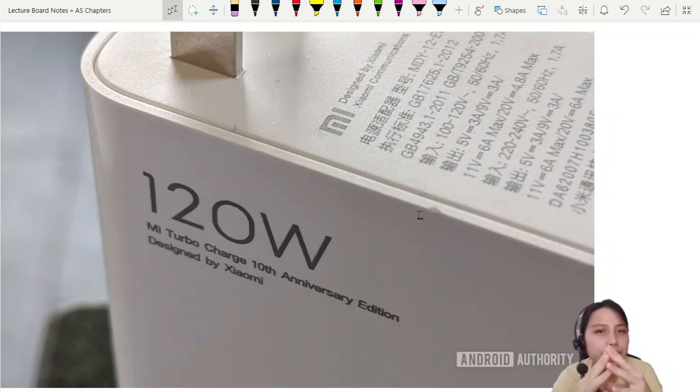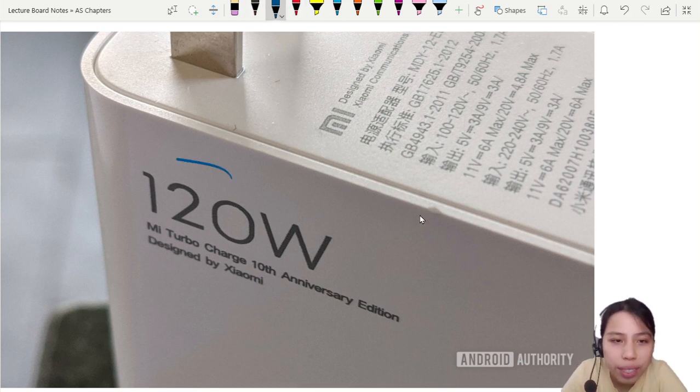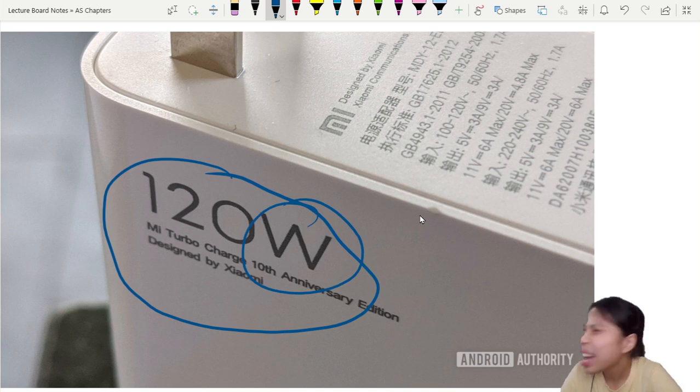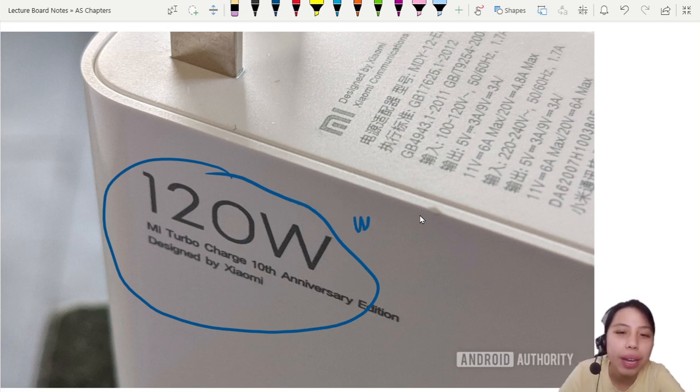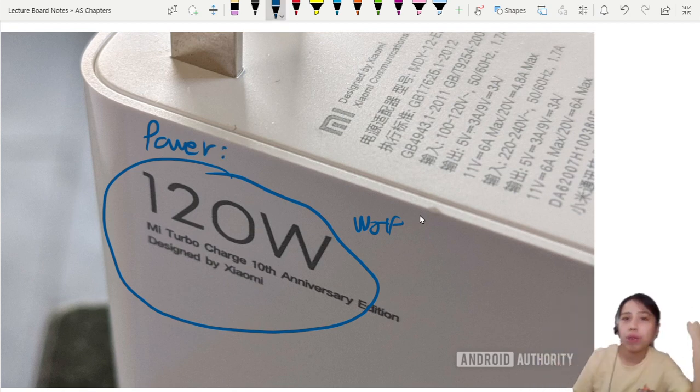If you take any electrical appliance, such as this charger I have behind me, charging phone, an oven, a kettle, an air con, even a lamp, a light bulb, you will see this 120 W. This is watts. W-A-T-T. And this is like the power rating. How fast this charger can convert electrical energy into something for your phone.